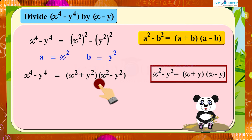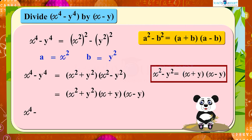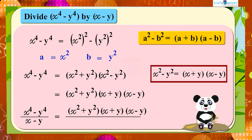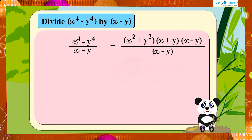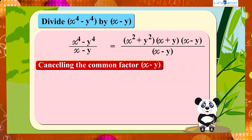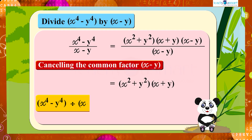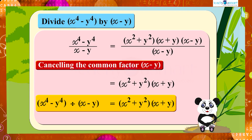So x⁴ − y⁴ equals (x² + y²)(x + y)(x − y). Therefore, x⁴ − y⁴ divided by (x − y) equals (x² + y²)(x + y)(x − y) divided by (x − y). By cancelling the common factor (x − y), we get (x² + y²)(x + y). That is, x⁴ − y⁴ divided by (x − y) gives (x² + y²)(x + y).